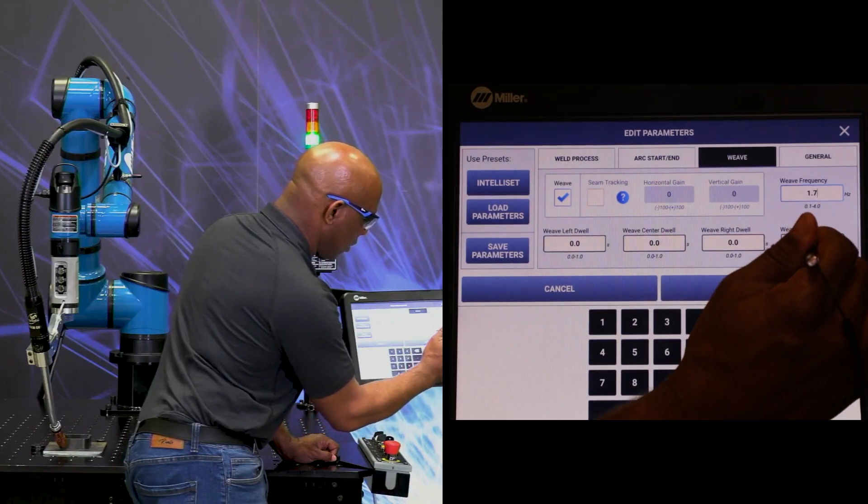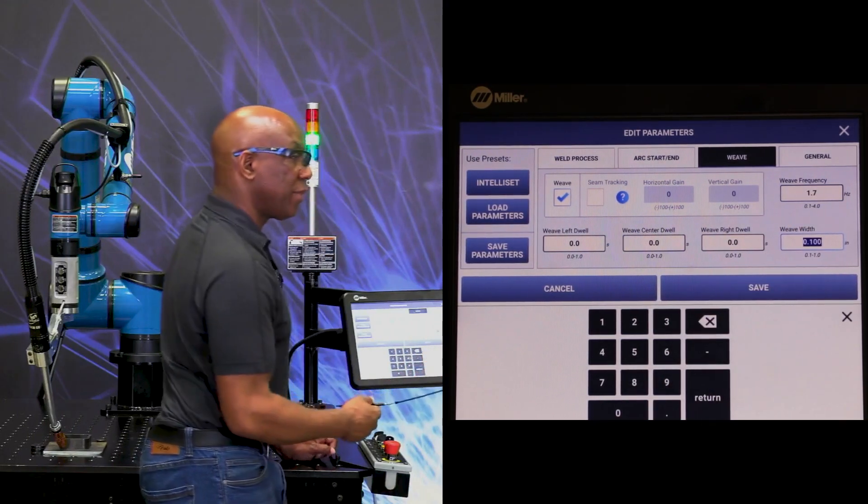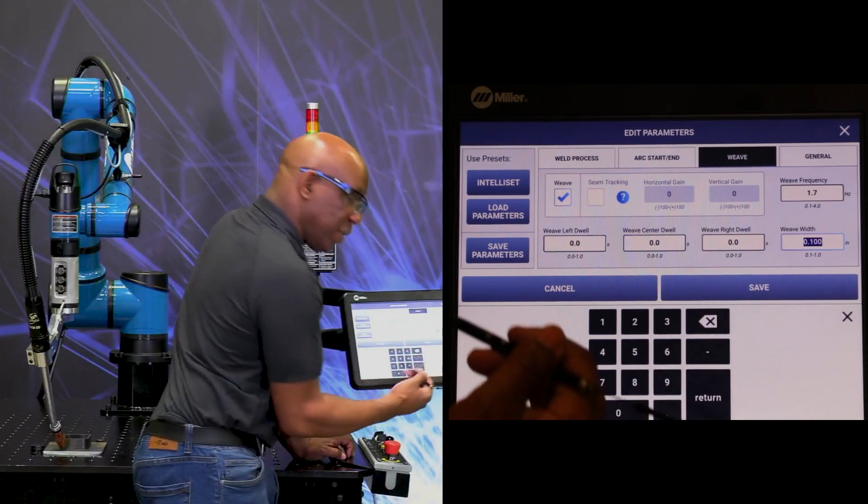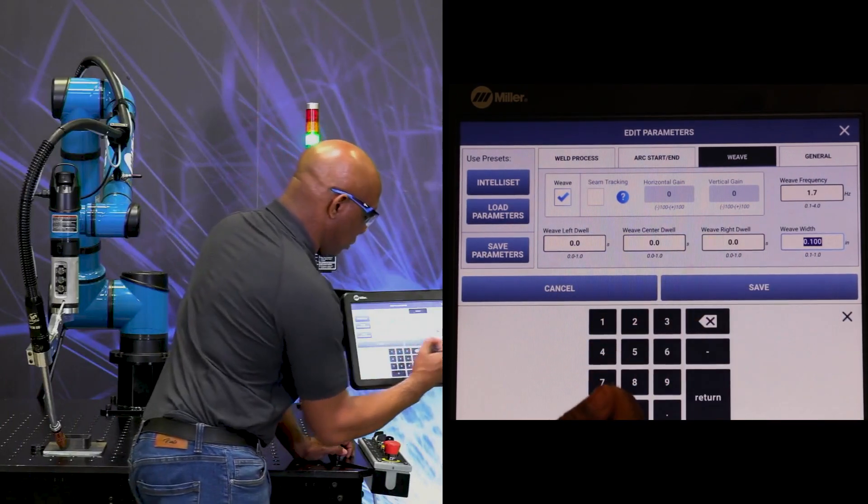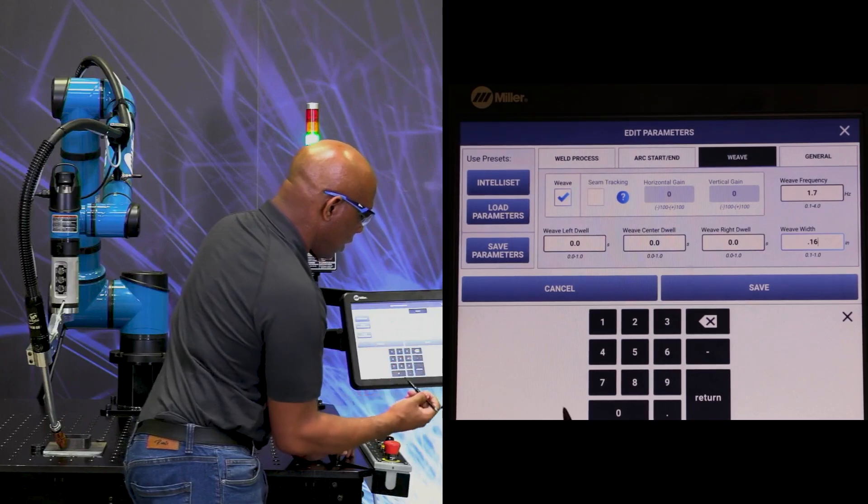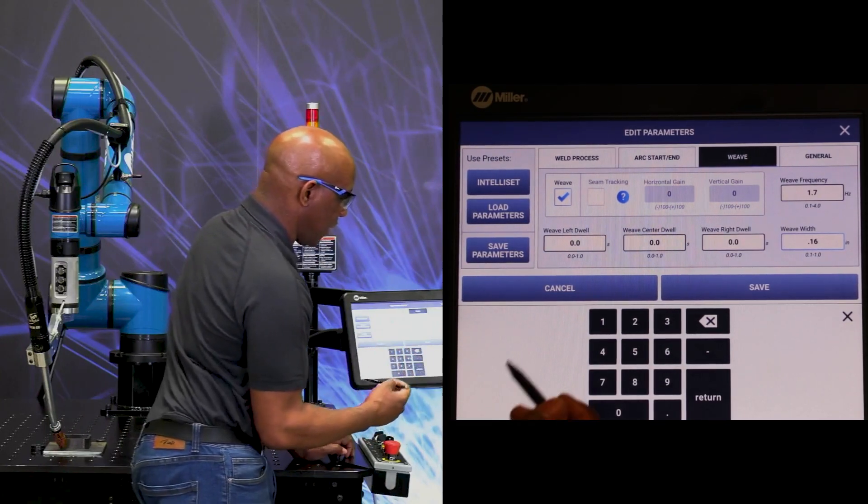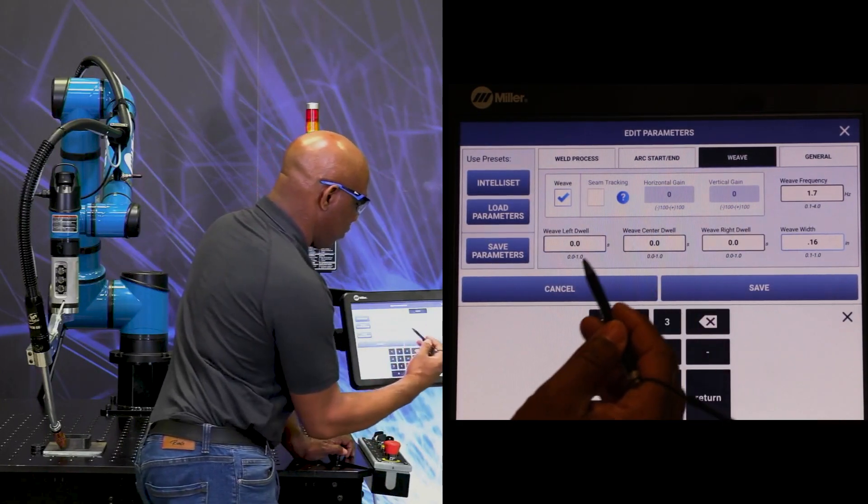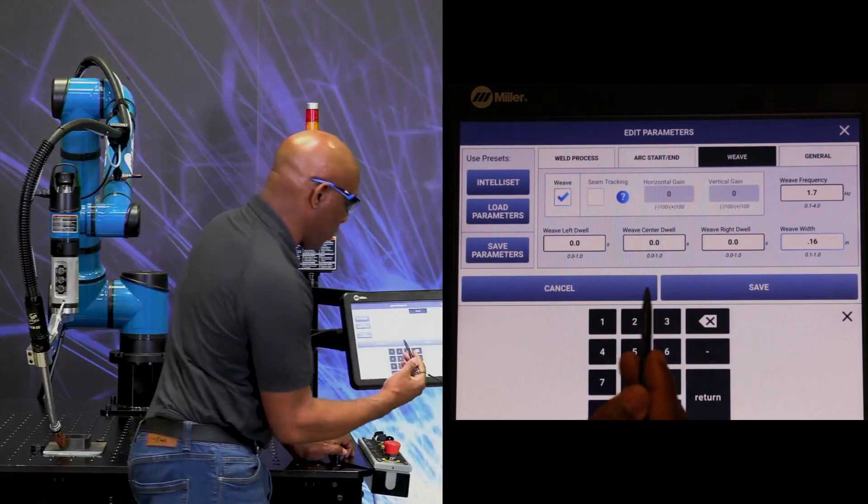And then our weave width, which is the amplitude across the joint. We're going to go 0.16, which with these weld conditions should give me a quarter inch weld.